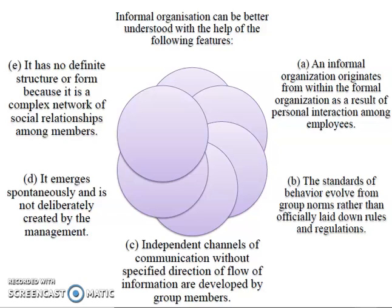Informal organization can be better understood with the help of the following features. First, an informal organization originates from within the formal organization as a result of personal interaction among employees. Second, the standards of behavior evolve from group norms rather than officially laid down rules and regulations. Third, independent channels of communication without specified direction are developed by group members. Fourth, it emerges spontaneously and is not deliberately created by management. Fifth, it has no definite structure or form because it is a complex network of social relationships among members.